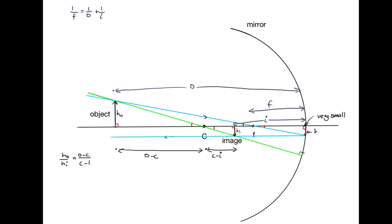So we can write H O over H I is equal to, now in the long triangle, we've got this length here, that's F, and this length is O. So this is O minus F.